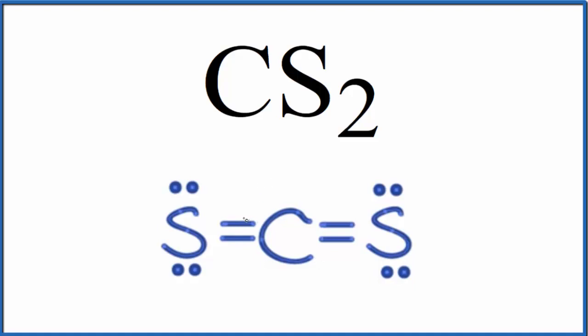We can note that we have one, two, three, four pairs of electrons. This line represents a pair of electrons. It's a single bond. So we have four pairs of electrons, and they're between the atoms. That means these are bonding pairs of electrons right here.